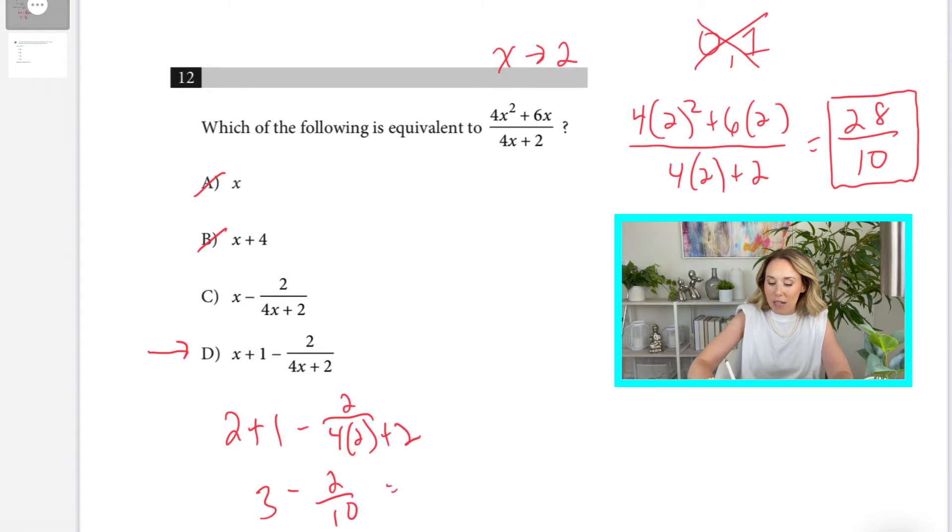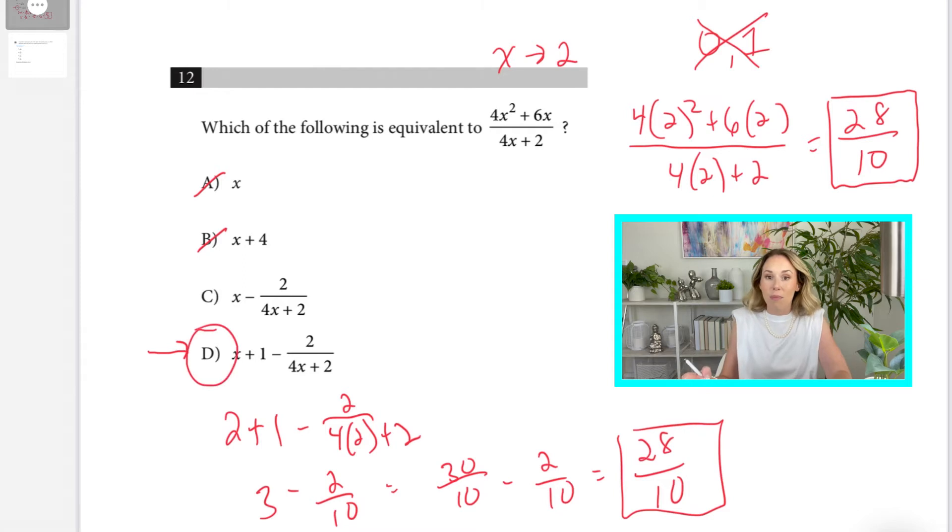And we end up with 3 minus 2 tenths. Well, when we get a common denominator, that's 30 tenths minus 2 tenths. And lo and behold, we get the same answer that we got in the problem. So, the answer is D.